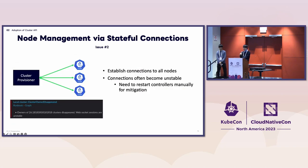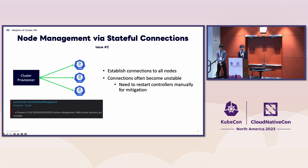The second issue is about node management. Our provisioner uses SSH for initial node bootstrap and establishes stateful connections to all nodes for managing them. The more users use our platform, the more clusters and nodes need to be managed. As the scale of our platform grows, those connections become often unstable. We would like to quit establishing stateful connections for all nodes and make it more scalable.